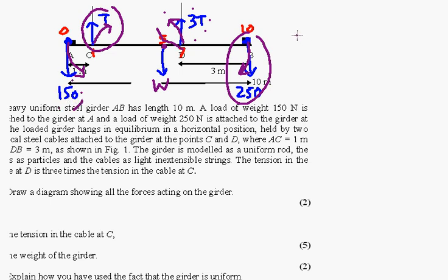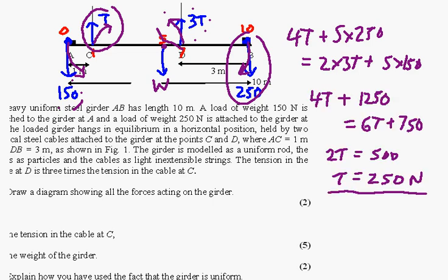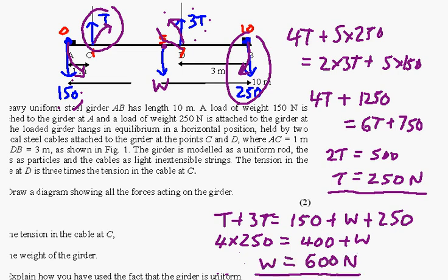So if I very quickly now write that, we get 4t, that's because the distance is 4 times t, add 5 times 250, and that must balance with the other direction, which is 2 times 3t, add 5 times 150. Now I've skipped to the calculations there, you can see that t is 250. Now the next thing is the weight of the girder, upwards forces equals downwards forces. And there we are, 600 newtons.